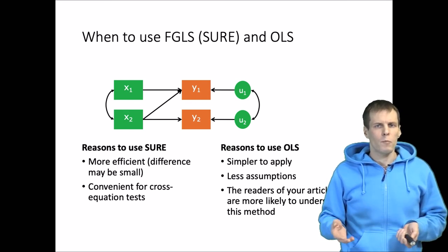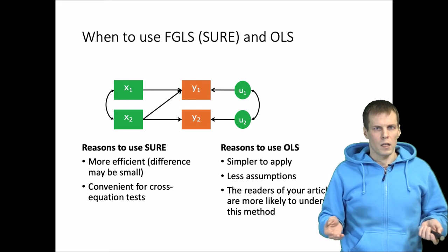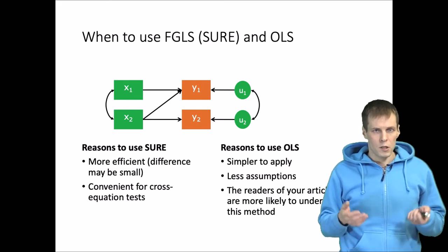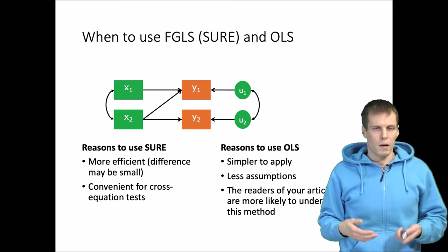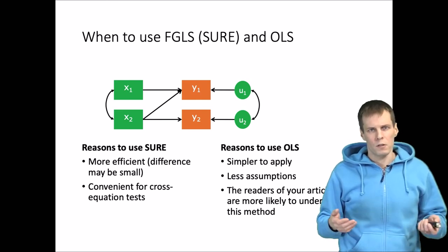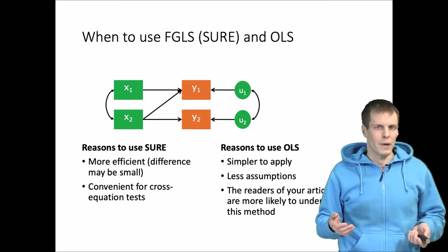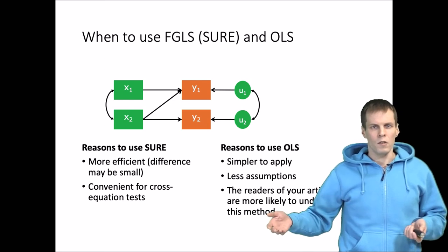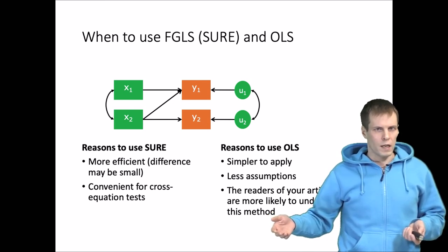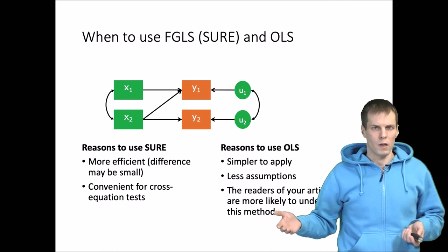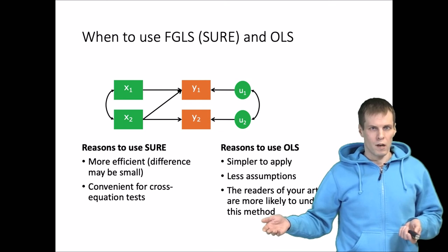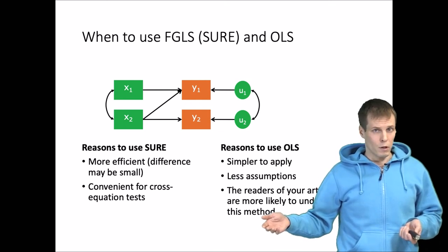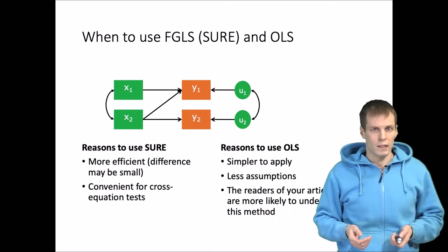I've reviewed a couple of papers that use seemingly unrelated regression estimation to estimate saturated models instead of using OLS regression, which is equivalent. When I ask the authors to justify their choices, I will get back some statistical jargon that shows that the authors really have not understood what seemingly unrelated regression estimation is, or I get back a paper where seemingly unrelated regression is replaced with OLS, which is what I would recommend in that case.